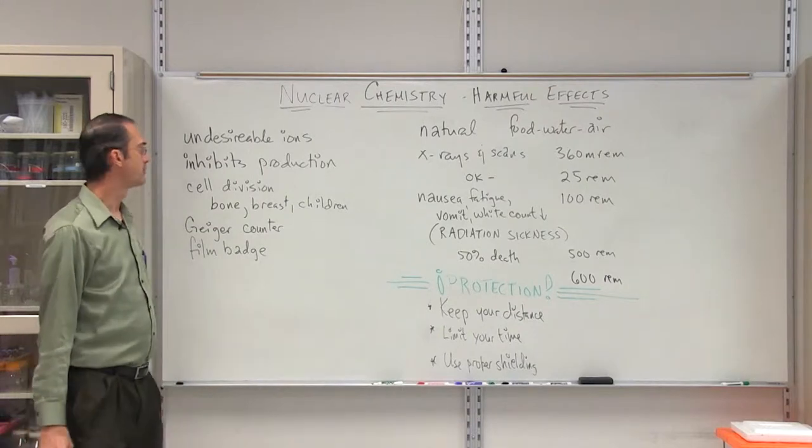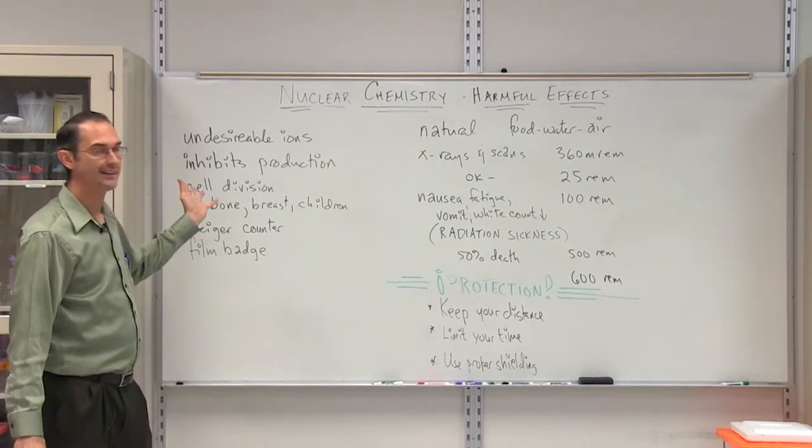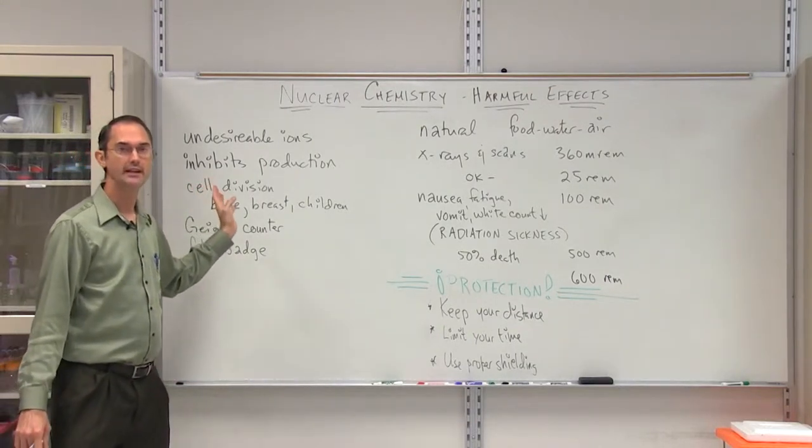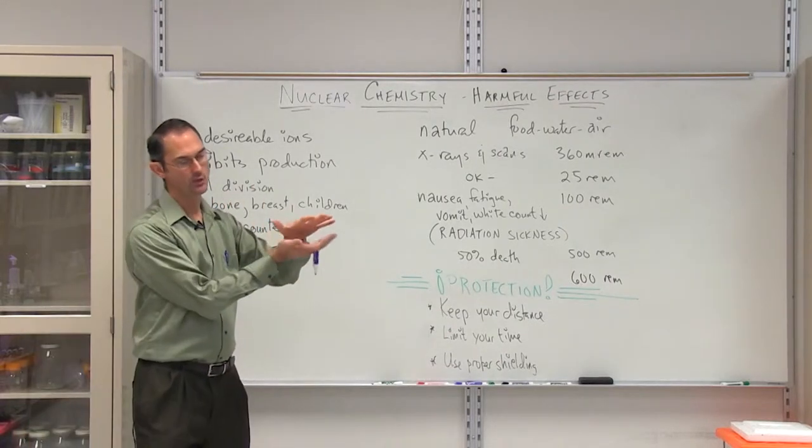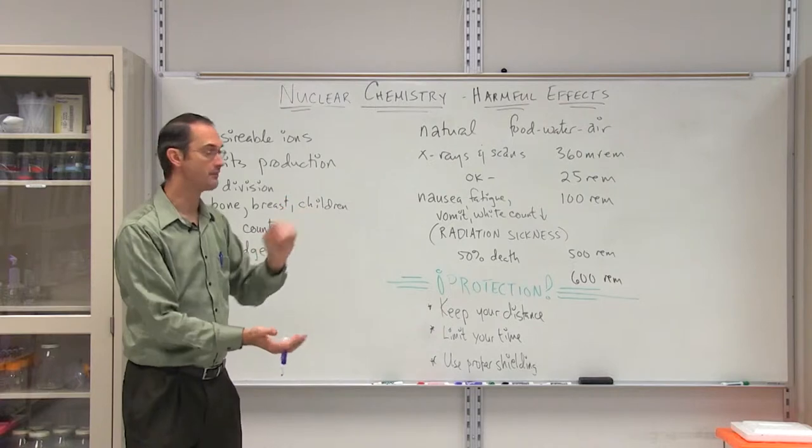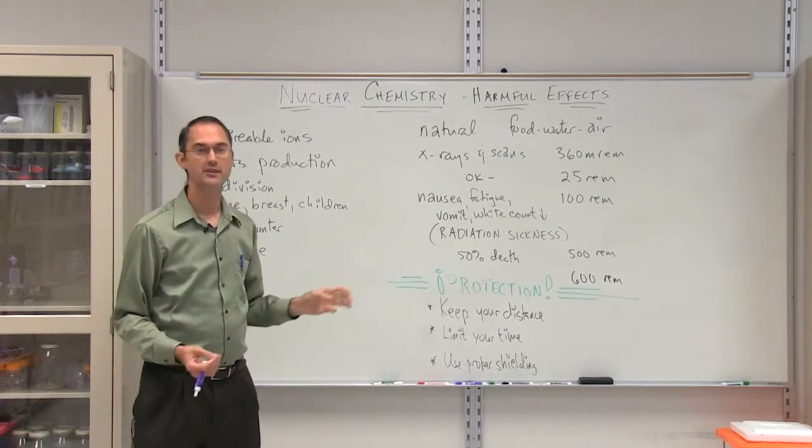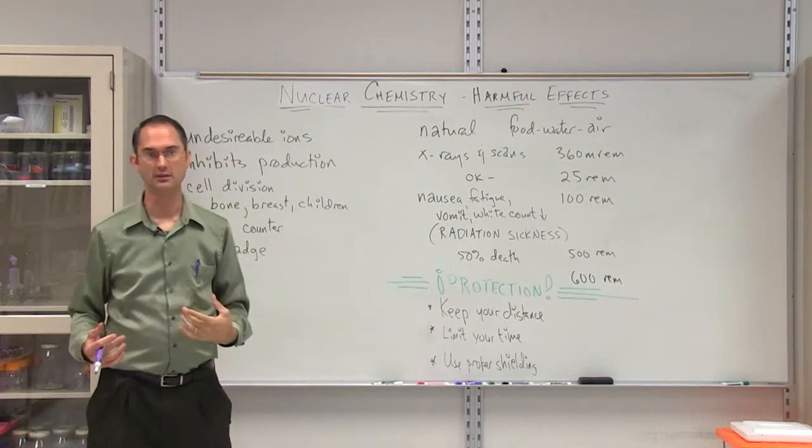This really comes in three parts. The first part deals with the mechanism behind which nuclear radiation is bad for human physiology. The second is a measurement of these harmful effects, and finally, the methods of protection that we can use to protect ourselves.